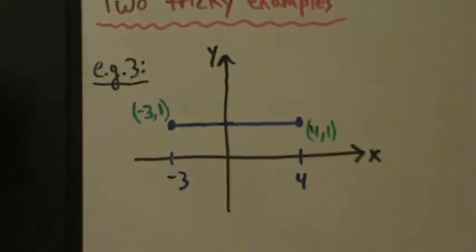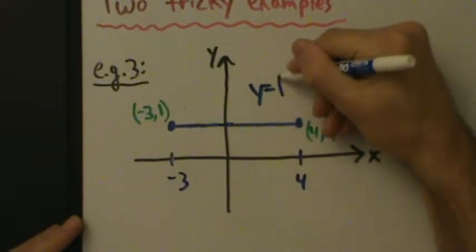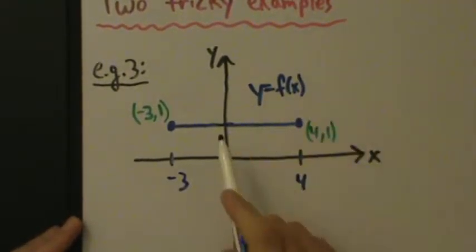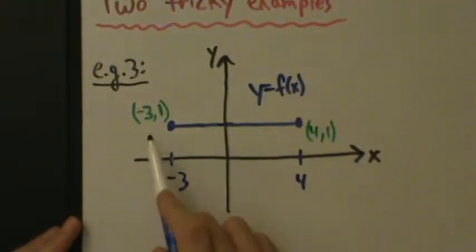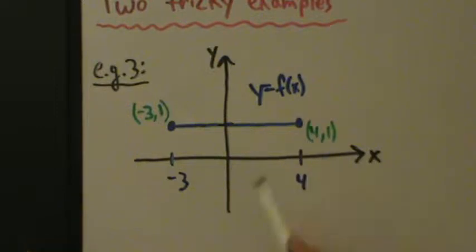So let's say we have this function here — let's call it y equals f of x. It's just the straight line segment from negative 3, 1 over to 4, 1. So where are the local mins and where are the local maxes?